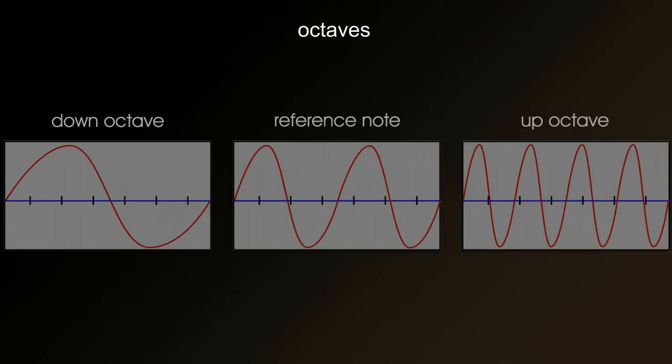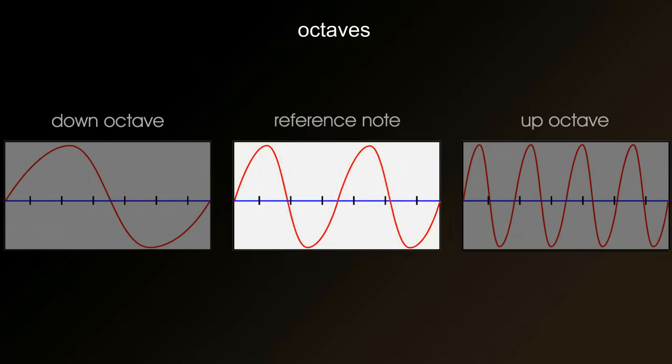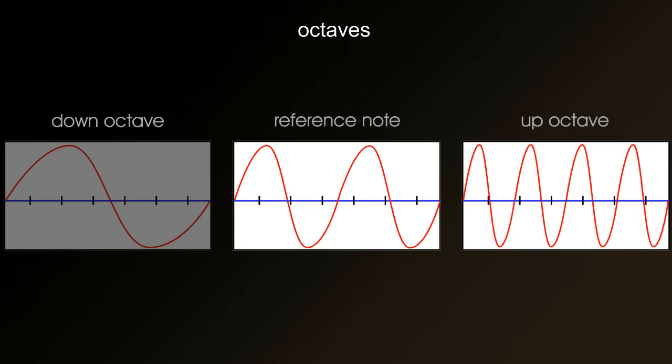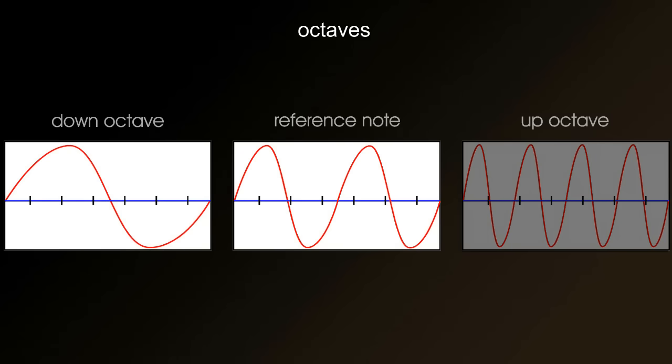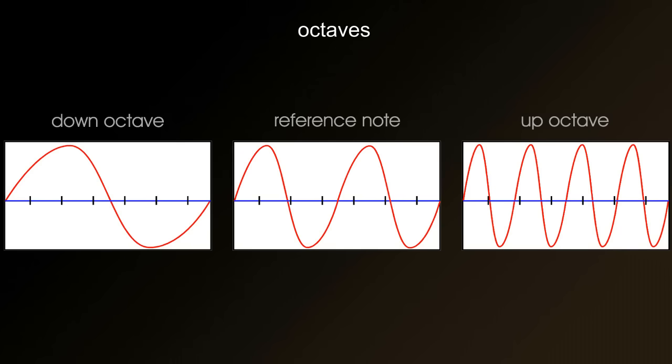If you prefer to think about this in a technical or scientific way, the octave is the point at which the frequency doubles or halves. So, if you were to take a fixed note or frequency as a reference note, an octave up from this would be doubled the frequency. And an octave down from this would be half the frequency. And every time you doubled or halved the frequency from the new points, it would be up or down another octave respectively.